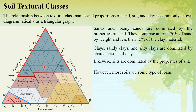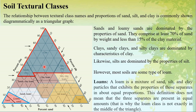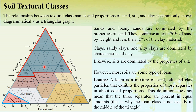Most soils are some type of loam. A loam is a mixture of sand, silt, and clay particles in about equal proportions — but this does not mean they are present in exactly equal amounts. If they were in exactly equal amounts, the loam class would be at the center of the triangle, but it is not exactly at the middle.